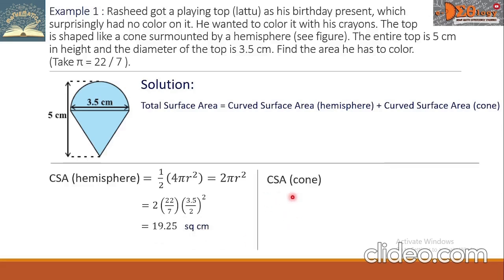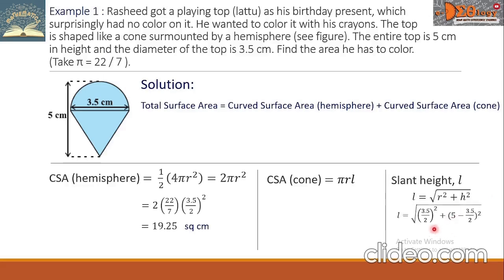Next is the CSA of the cone, with formula πrl, where l is the slant height. Solving for slant height: l = √(r² + h²). With r = 3.5/2 squared giving 3.0625, and the height of the cone being 5 minus 3.5/2 equals 3.25, squared gives 10.5625. The total under the square root is approximately 3.6912. This is our l value.